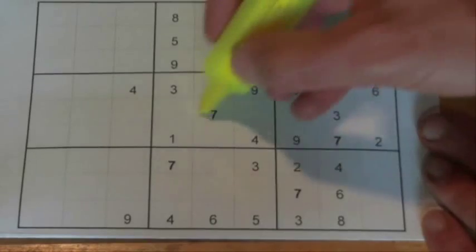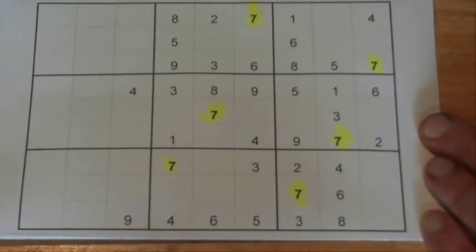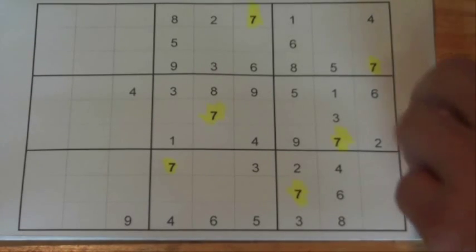We can see that all the 7s, we've got all the 7s over here on those right 6 boxes, and we're going to use those 7s to have a look and solve some of the 7s over on the left hand side.